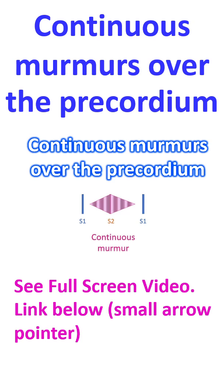By definition, a continuous murmur is one which starts in systole and continues through the second heart sound into diastole. It need not be present throughout the cardiac cycle.